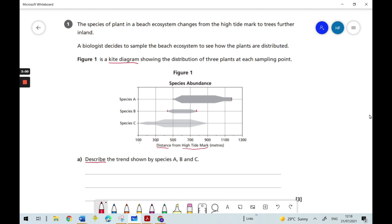So let's try and use that in our answer. We could say species A is most abundant, meaning there's most of it, most abundant, further from the sea.